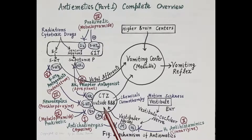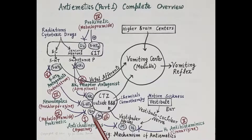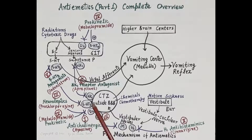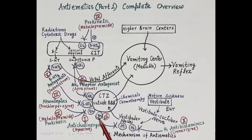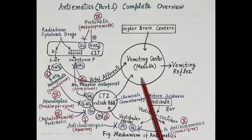Emetogenic substances include chemicals, chemotherapeutic agents, and drugs like morphine and digoxin. The main receptors located on the chemoreceptor trigger zone are dopamine D2 receptors, 5-HT3 receptors, neurokinin-1 receptors, and cannabinoid CB1 receptors. Stimulation of these receptors by emetogenic substances activates the CTZ, transmitting emetogenic impulses to the vomiting center, inducing vomiting.